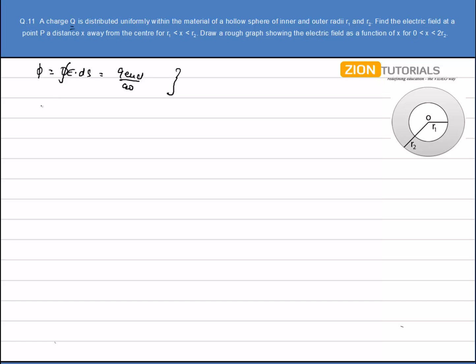When x varies from 0 to R1, the E·ds will equal Q enclosed. There is no charge between 0 to R1 distance, so Q enclosed is 0, and so the electric field E1 is 0.